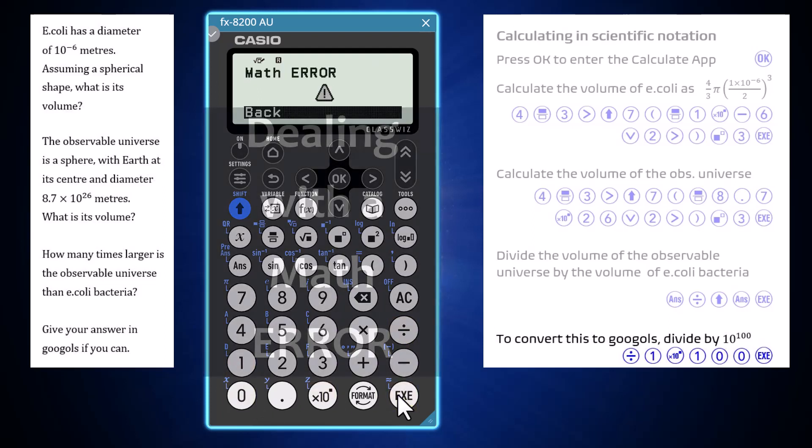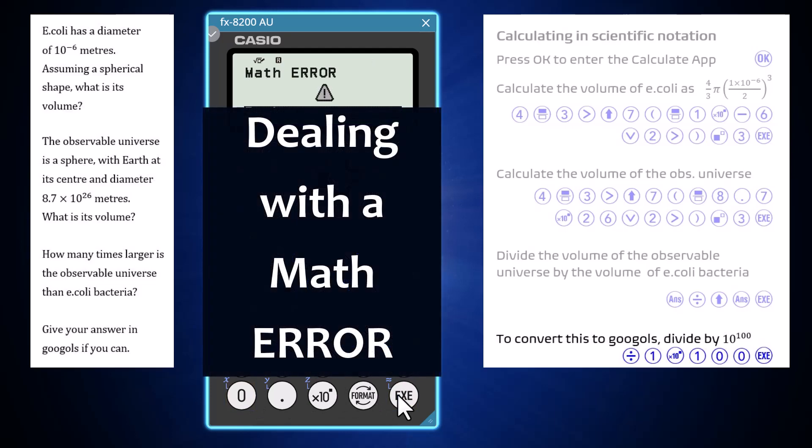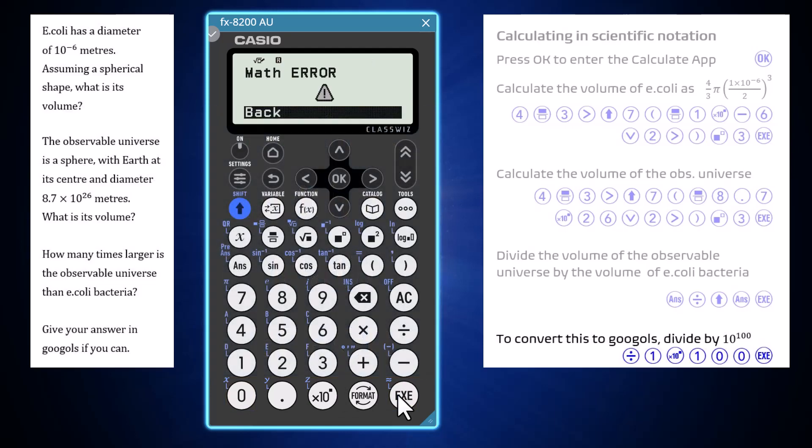Oh dear. The 8200 has a limit on the size of numbers it can work with, and it turns out that this limit is around about 9 by 10 to the power of 99, so just a little bit smaller than a googol.